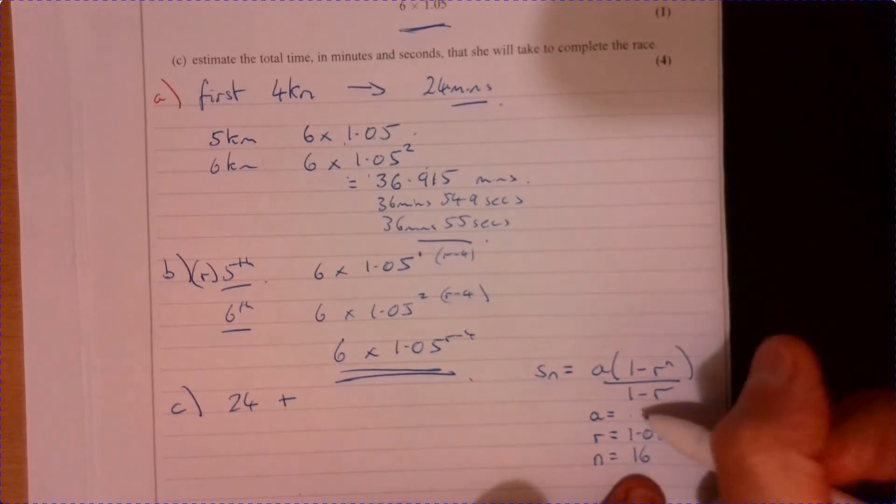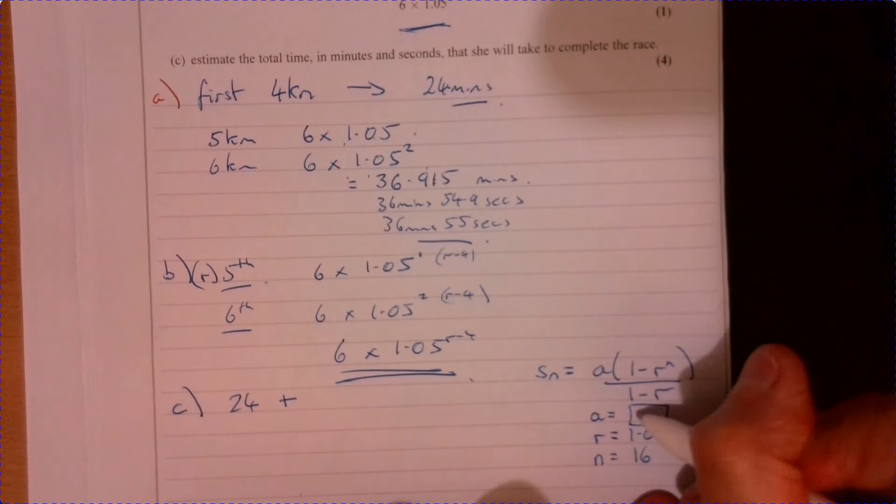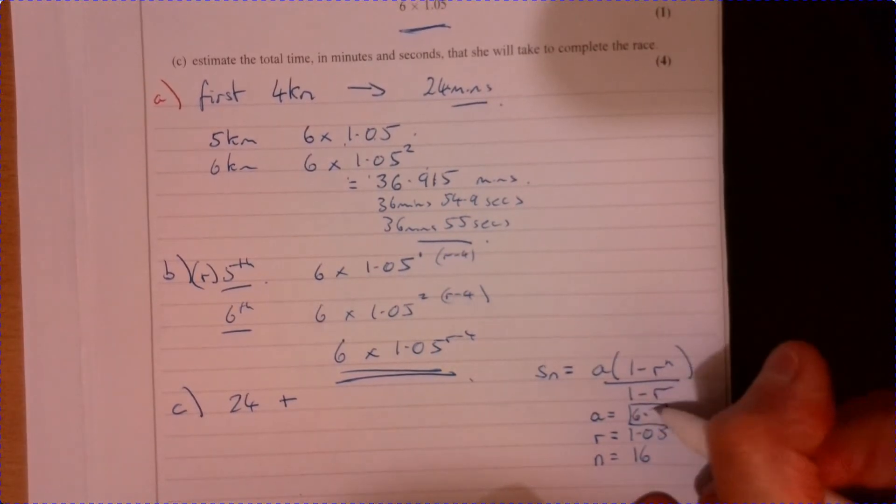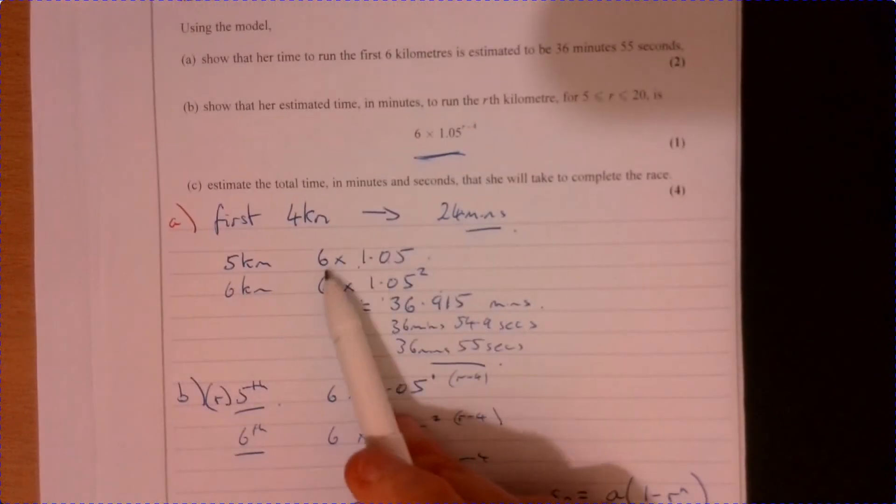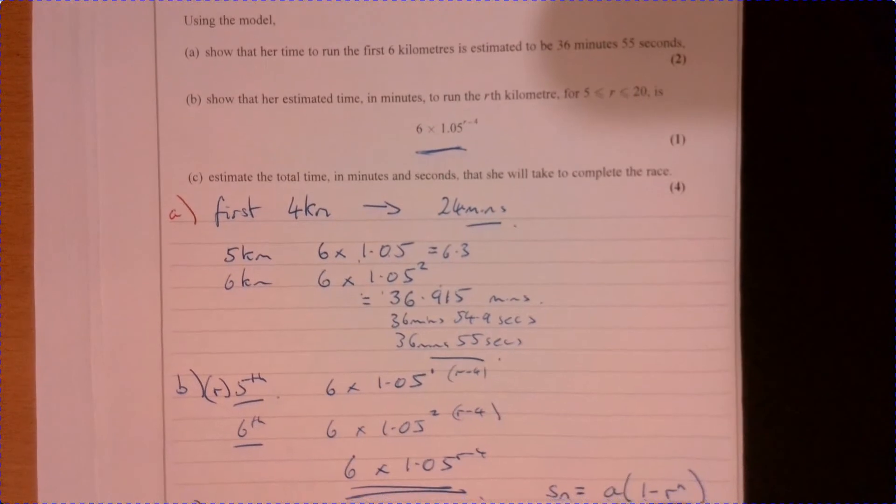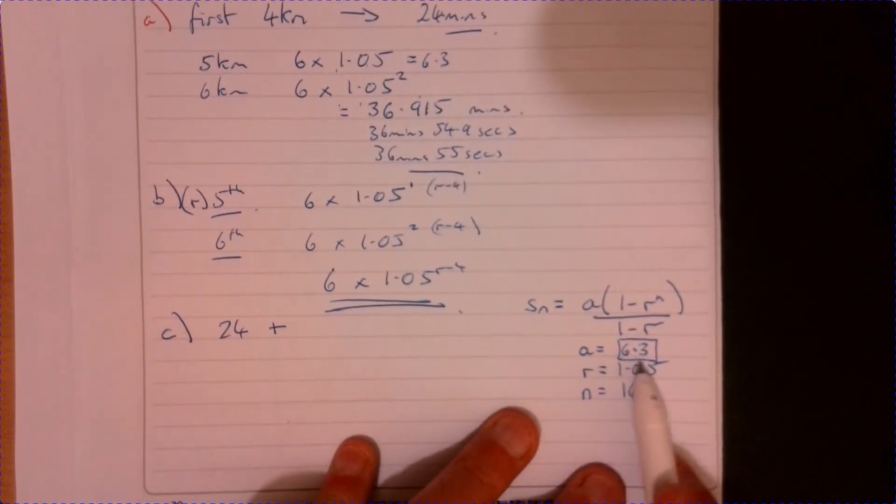Now, what's this value going to be here? Yes, this is where I made a mistake. Because the fifth one, the first one that you're thinking about is 6.3. That's 6 times 1.05. That's this value just in there. And not 6, right? Yes, that's the mistake I made.